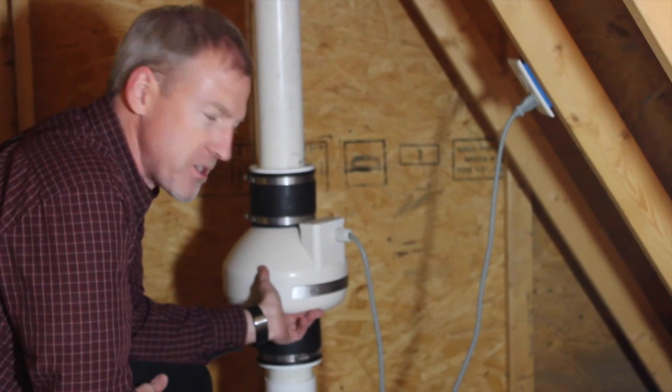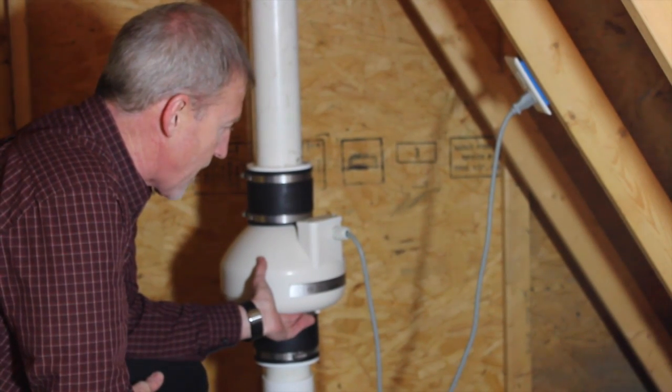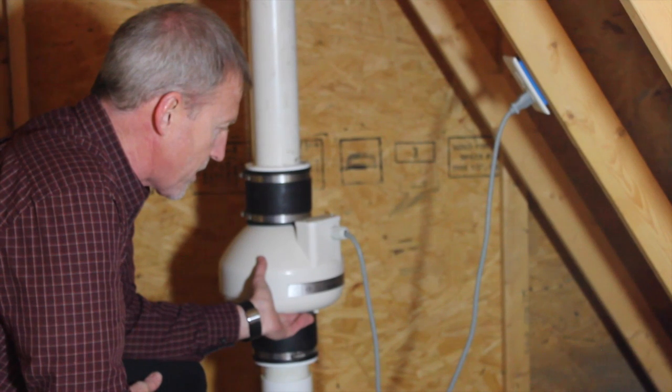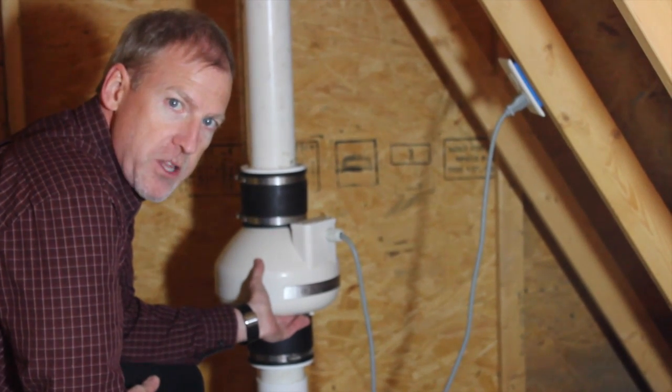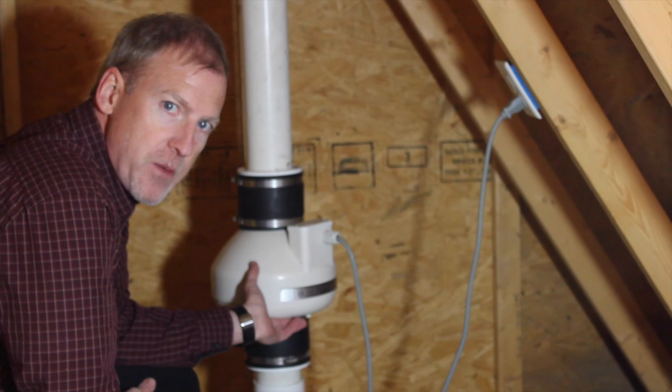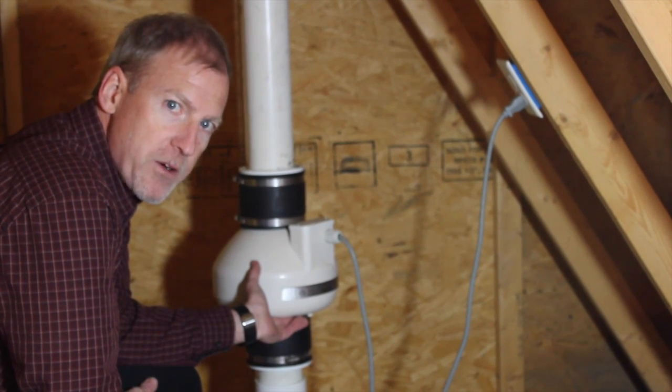The part of the radon mitigation system that makes it active is the fan. Normally installed in an unfinished area, above a garage in the attic, sometimes up in the house attic as well.